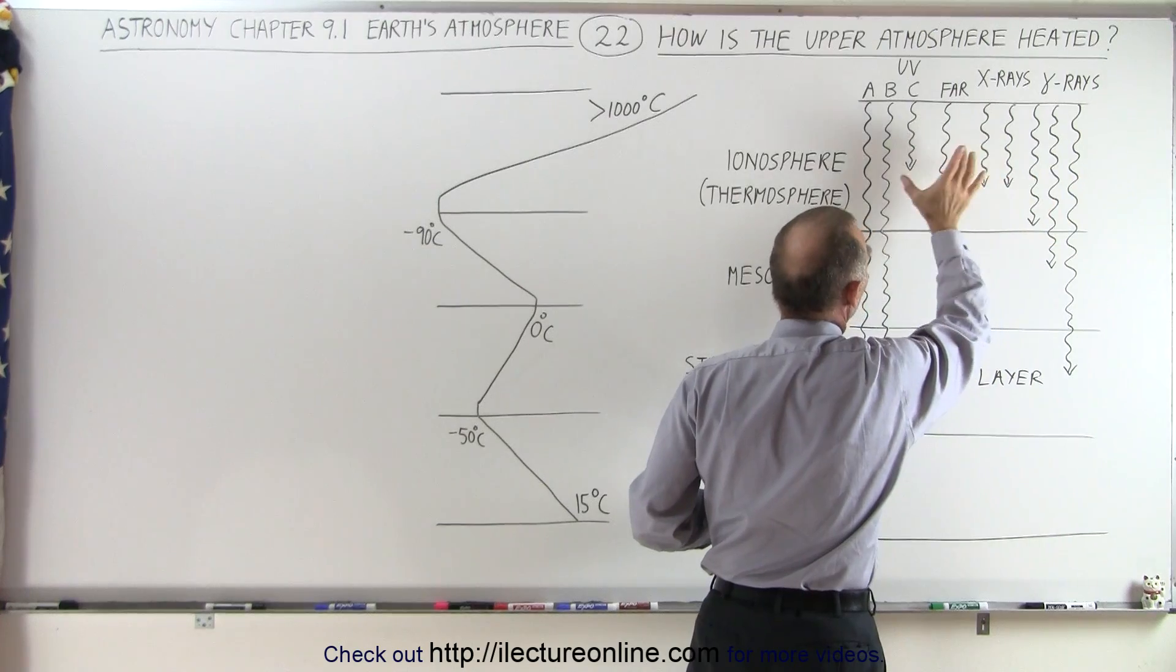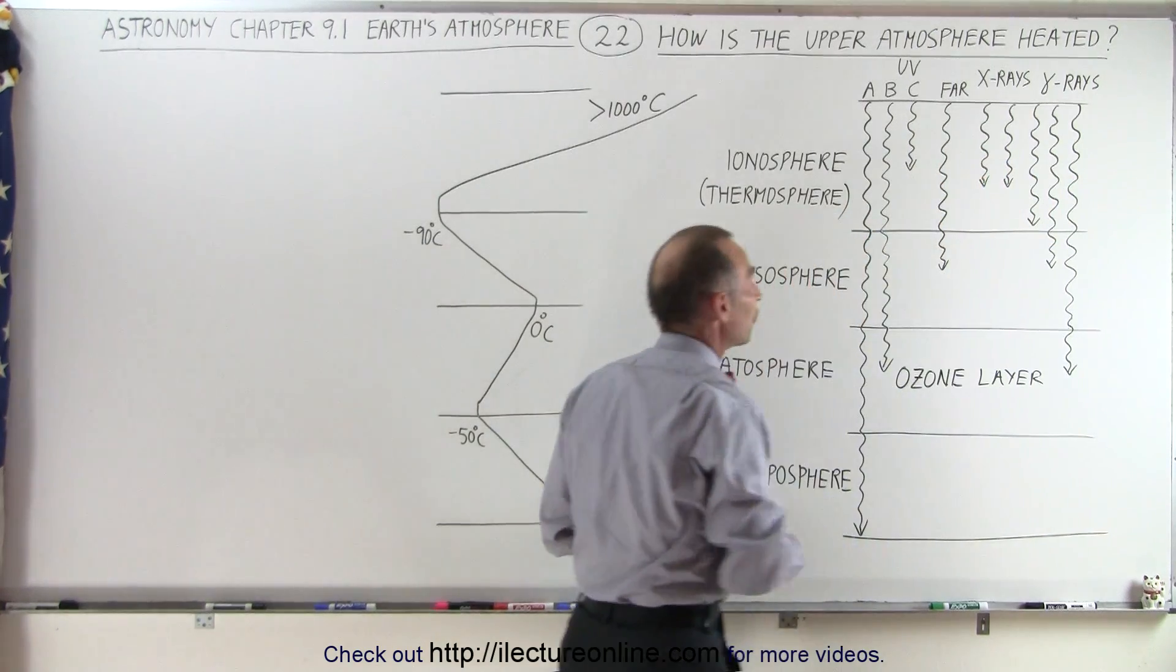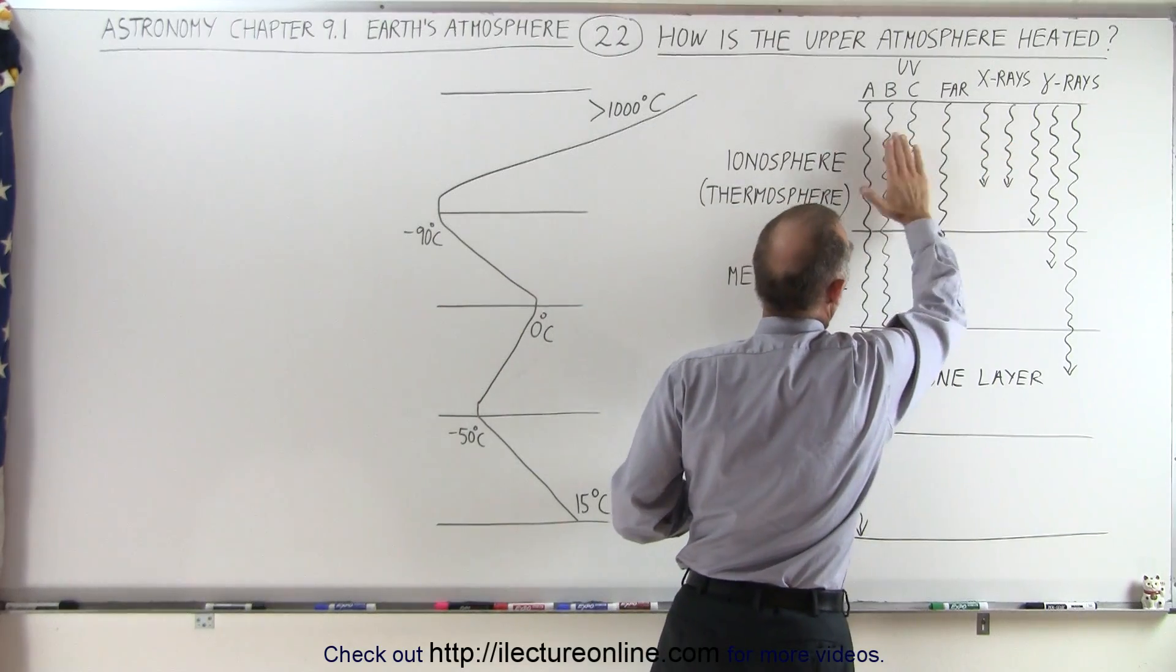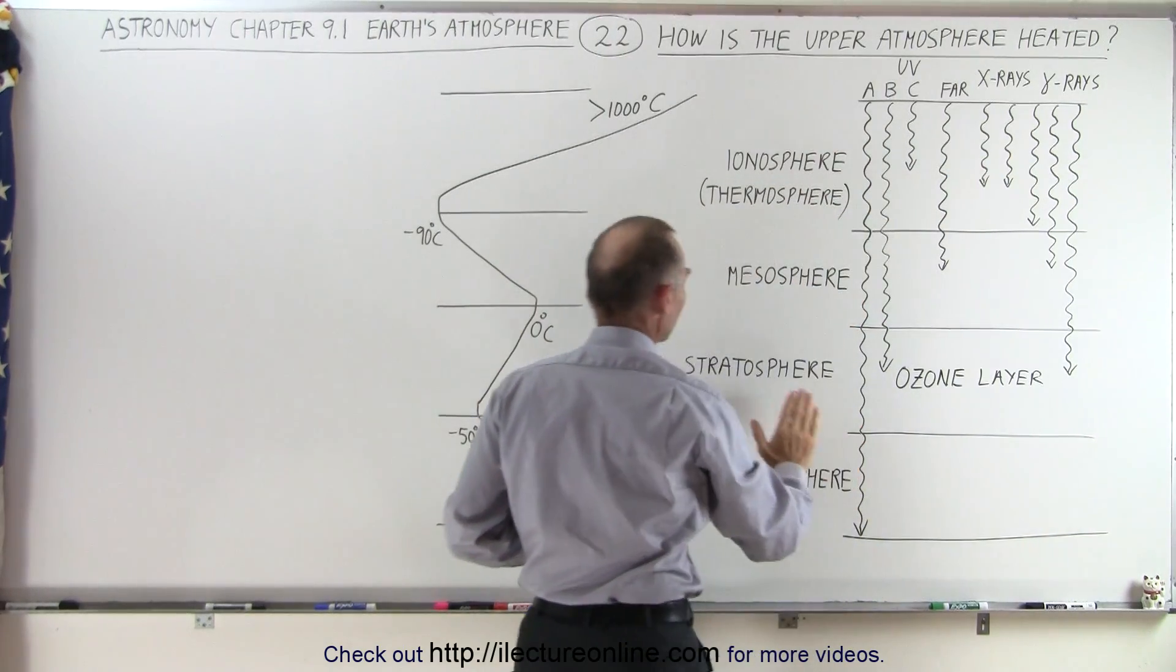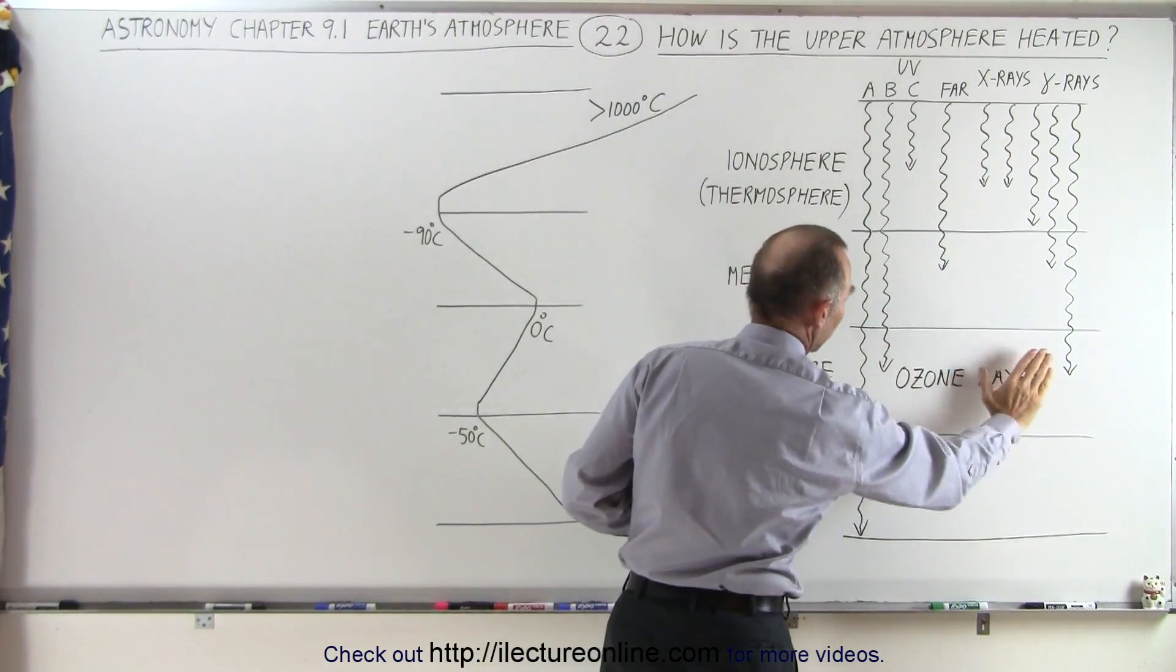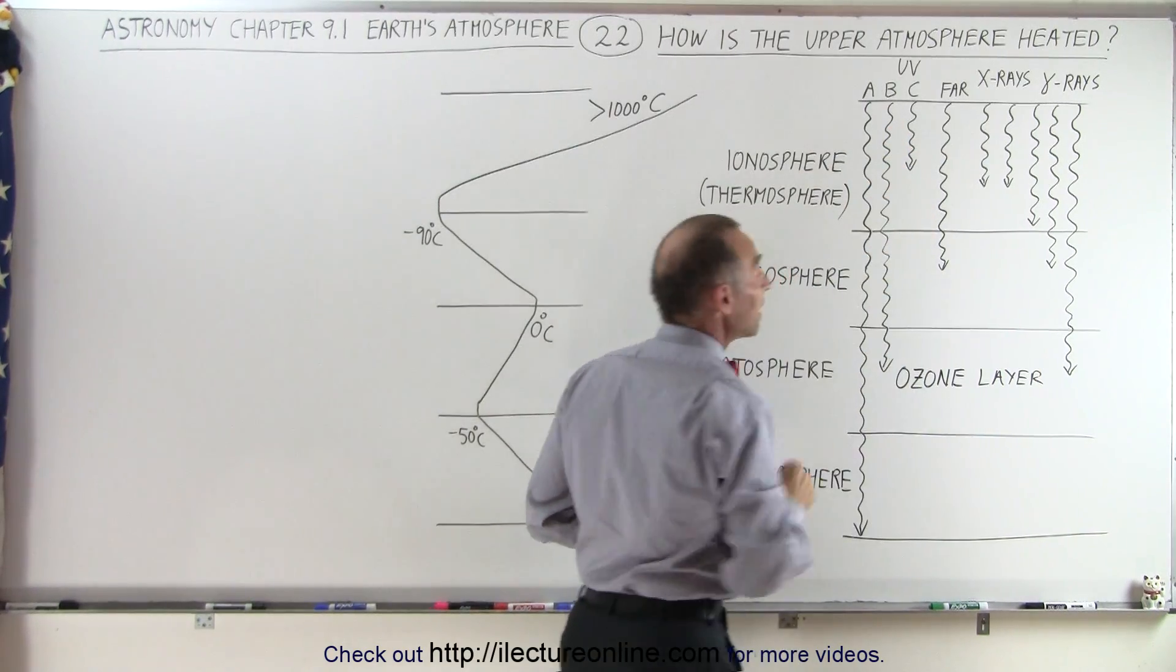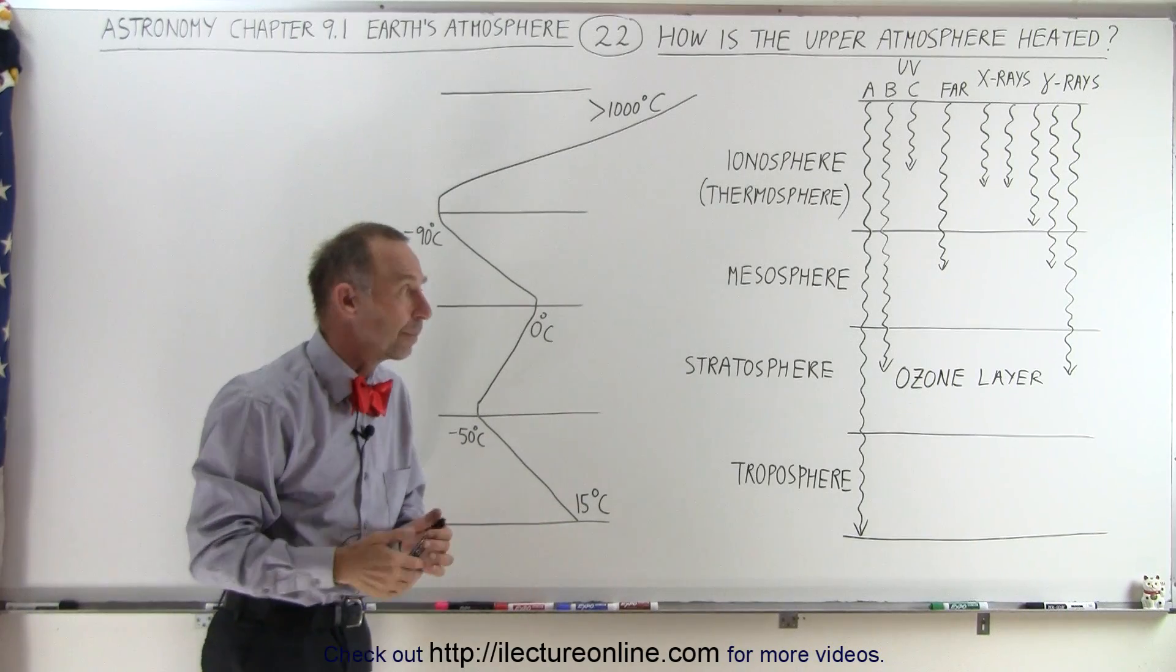But x-rays and high energy UV are not, and therefore the ionosphere does heat up by absorbing this radiation. And we can see that the stratosphere heats up because it primarily absorbs the UVB radiation, which is plentiful coming from the Sun.